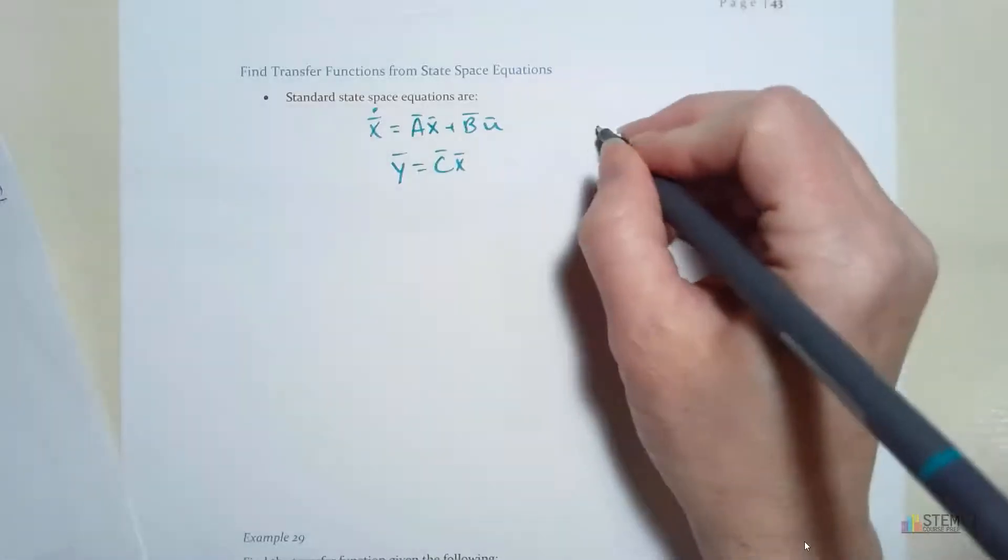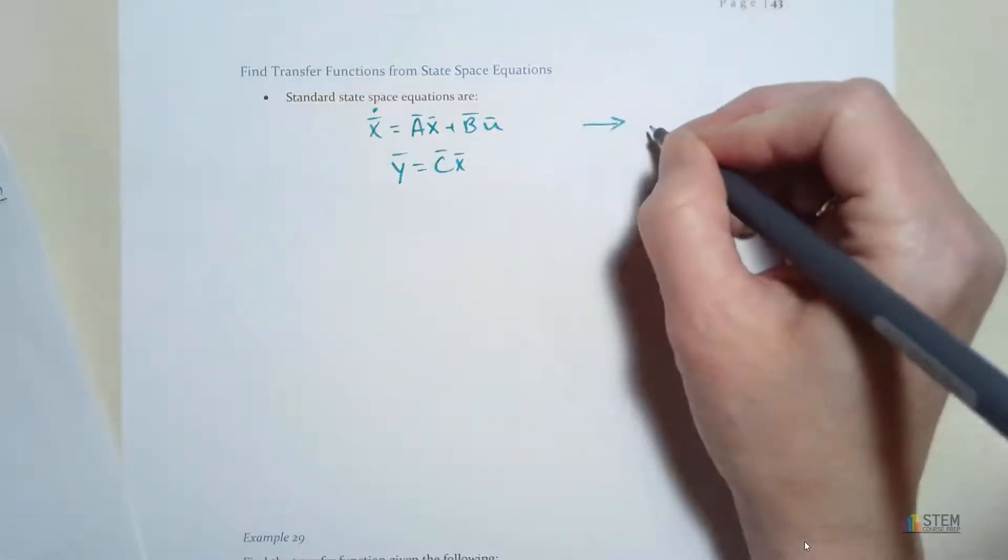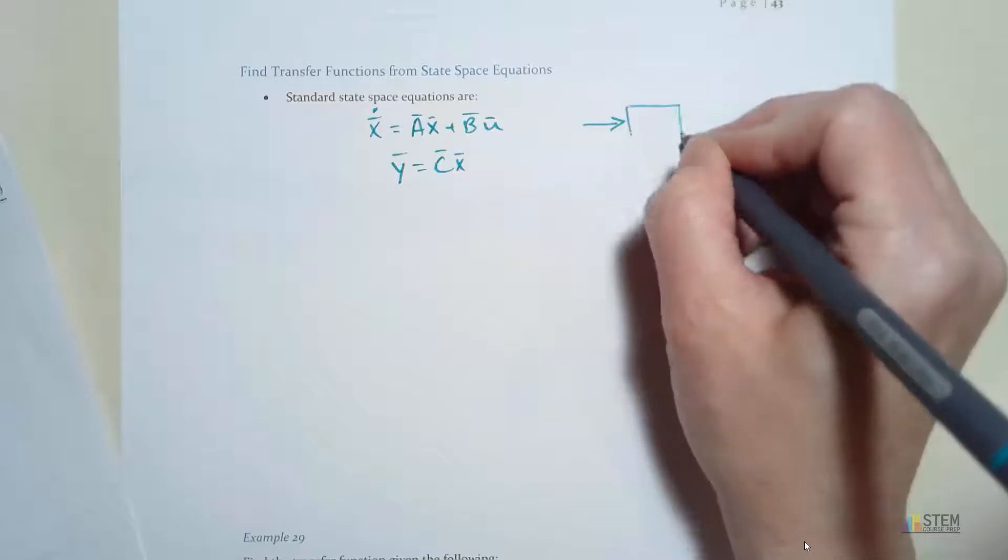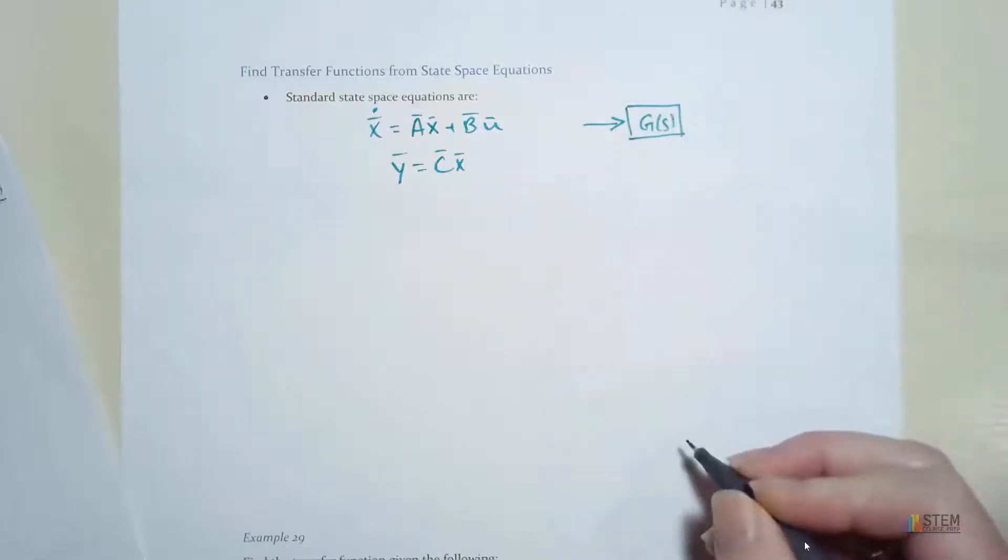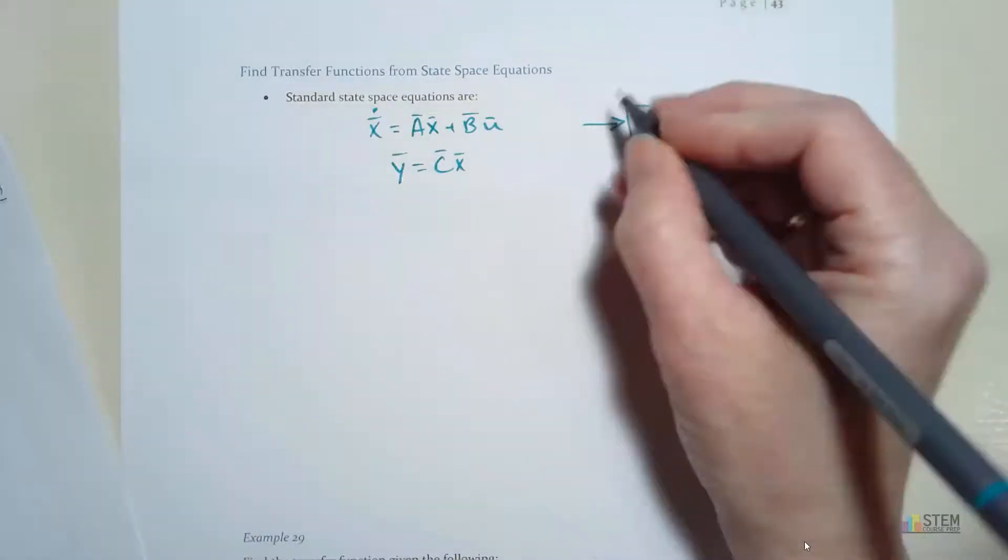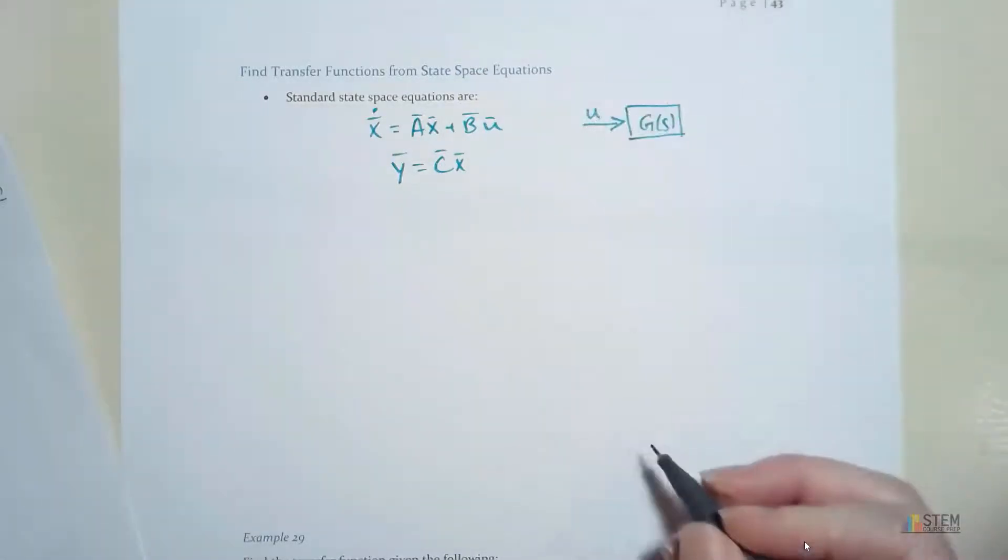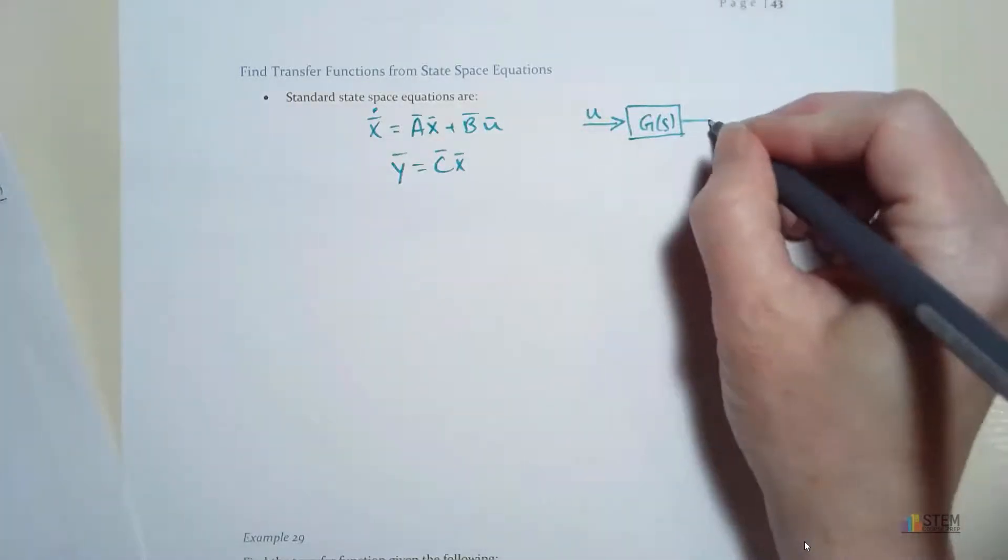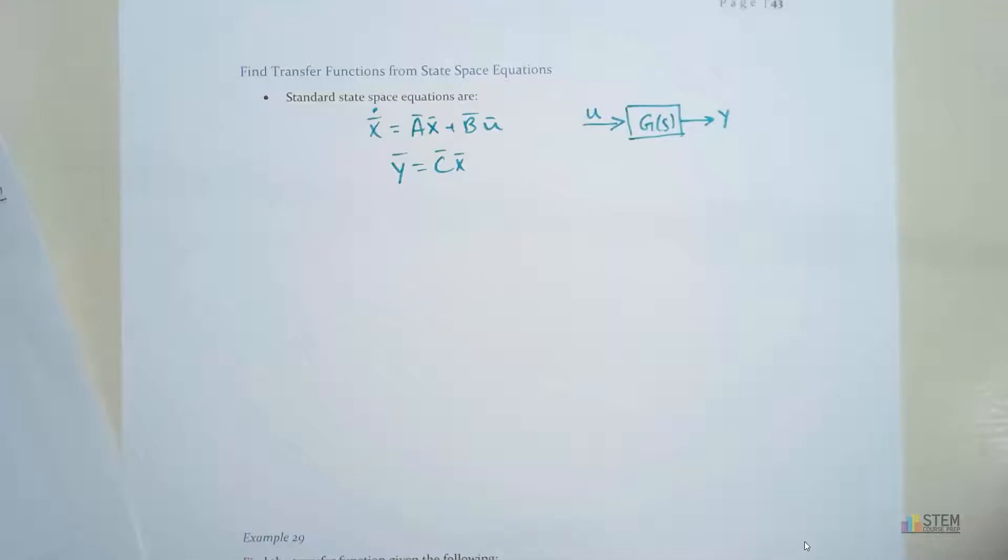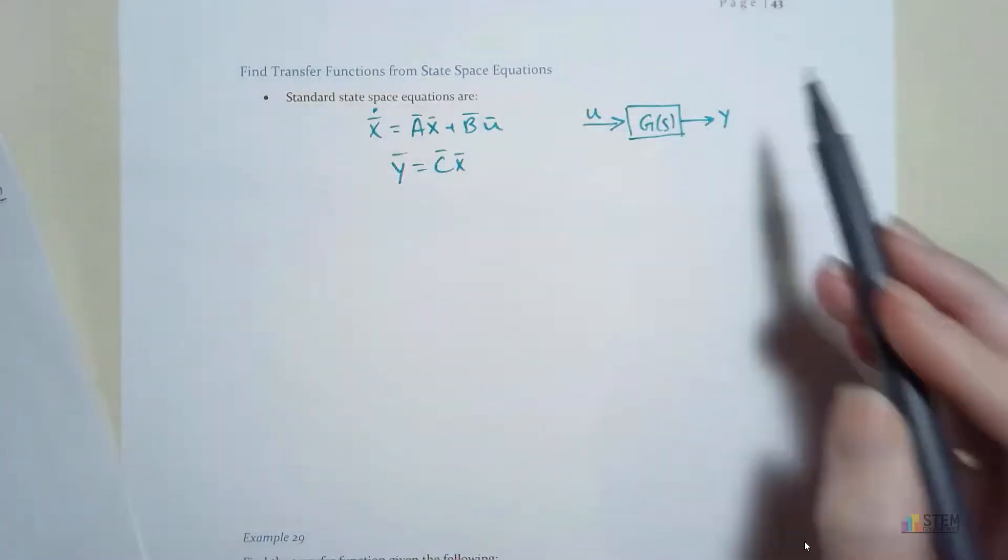And let's draw a little block diagram here just to represent what's going on here. So this block is going to represent the transfer function g of s. We've got an input coming in here. That input is going to be u. So you can see right here we have the input u. And then what comes out is y.